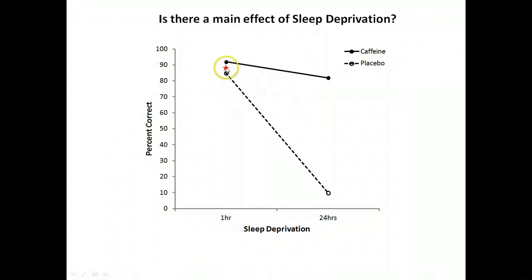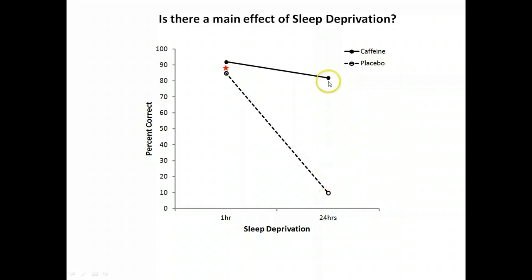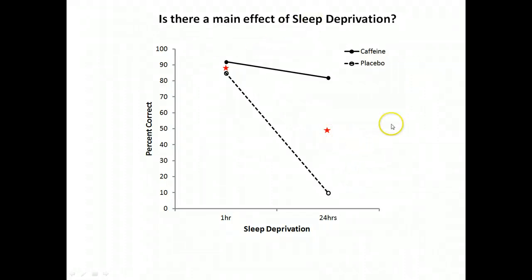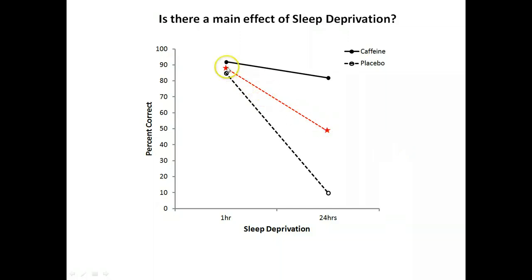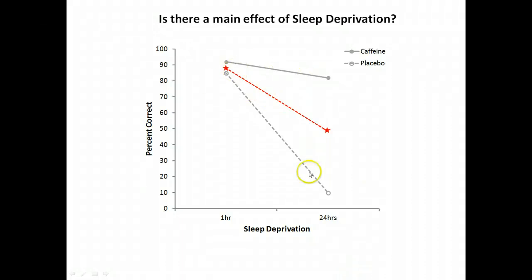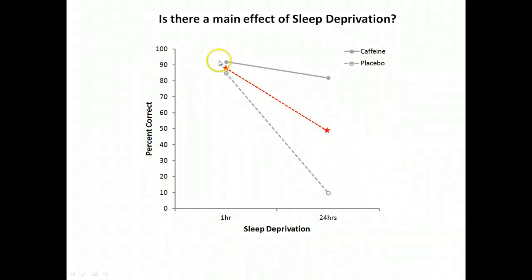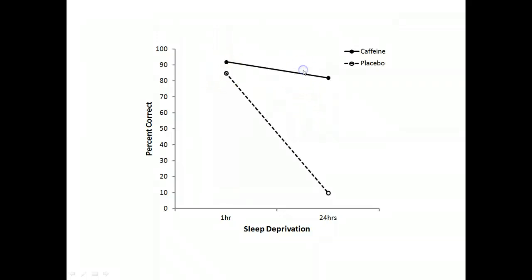We represent the one-hour average as a red star on the plot. Then we want to find the average performance for the 24-hour condition — again ignoring whether it came from the caffeine or placebo group — which falls roughly here. What the main effect of sleep deprivation is asking is simply whether these two average points are different: is average performance at one hour different from average performance at 24 hours? We're ignoring which supplement group the data came from — that's what the main effect of sleep deprivation is doing.